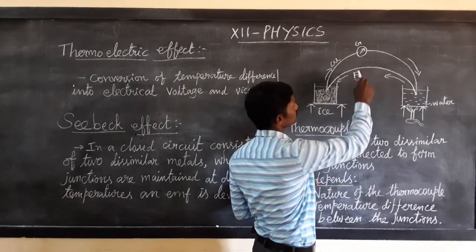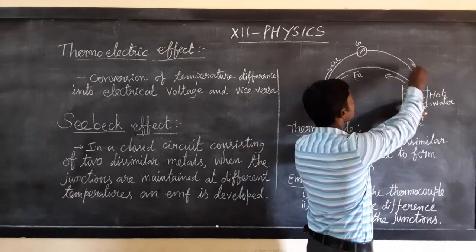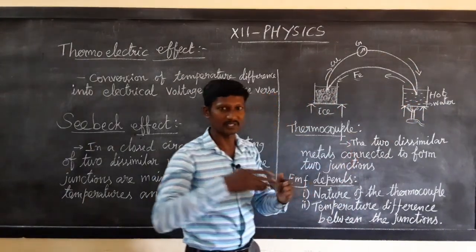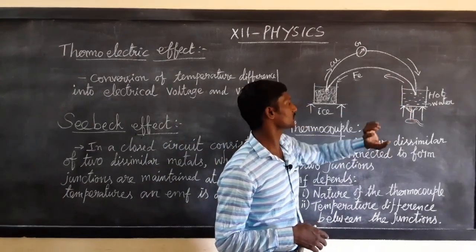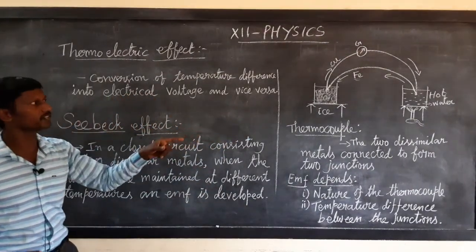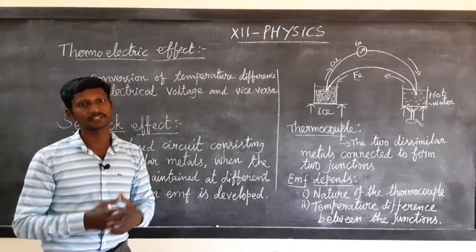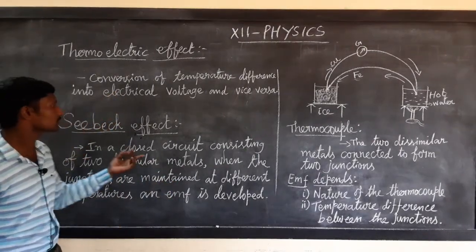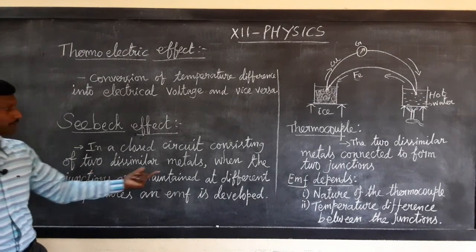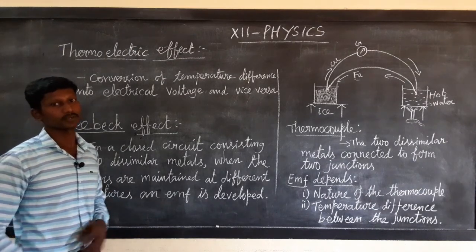Current flows from copper to iron at the hot junction. Now let's look at the diagram. The Seebeck effect: when a temperature difference exists between the hot and cold junctions of a closed circuit consisting of two dissimilar metals, an EMF is developed. When the junctions are maintained at different temperatures, an EMF is developed, and that junction arrangement is known as a thermocouple.